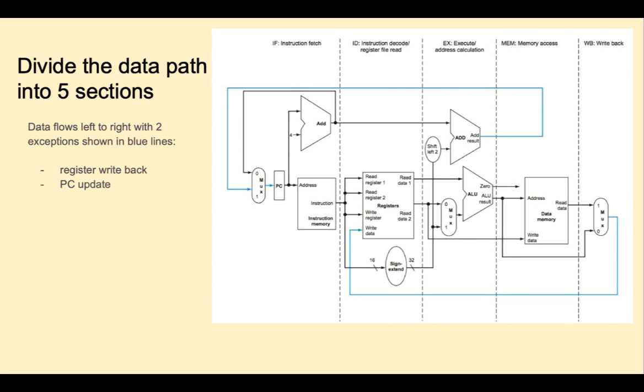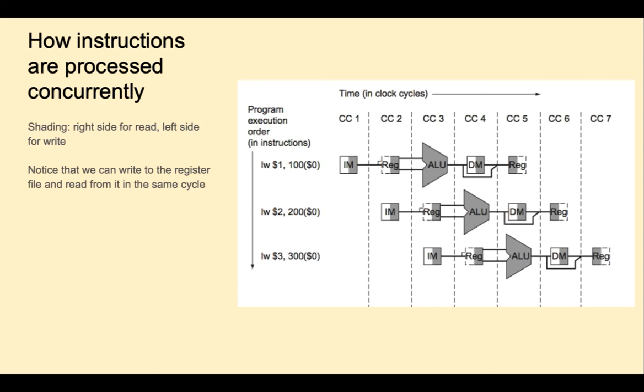This is a first look at how we might divide the single cycle implementation into five stages or sections. Data flows generally left to right, with two exceptions shown in blue, when we update the PC and when we write back to the register file. Each stage will take one shorter clock cycle, and we'll be working on only one instruction in that stage. Here we see how the processor can work on different instructions concurrently with pipelining. Notice that each component, for example the ALU, is working on a different instruction in each clock cycle.